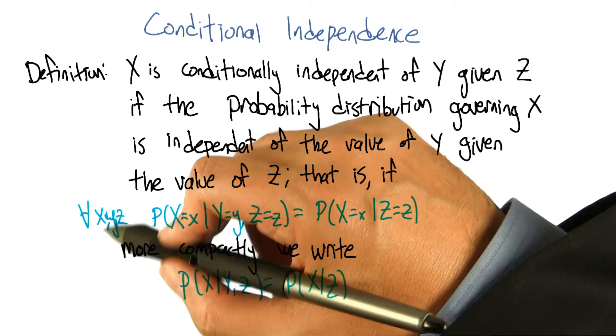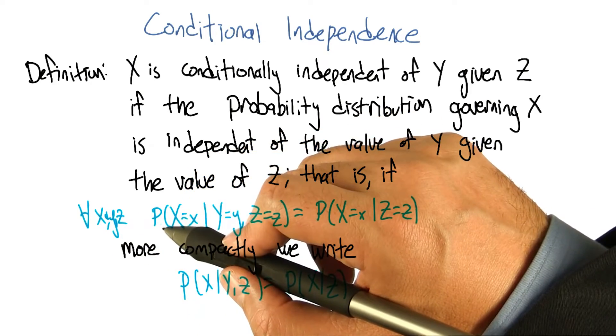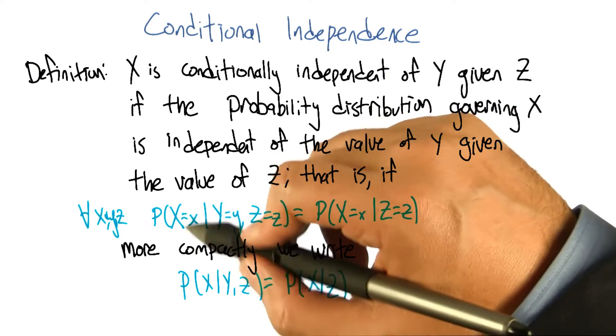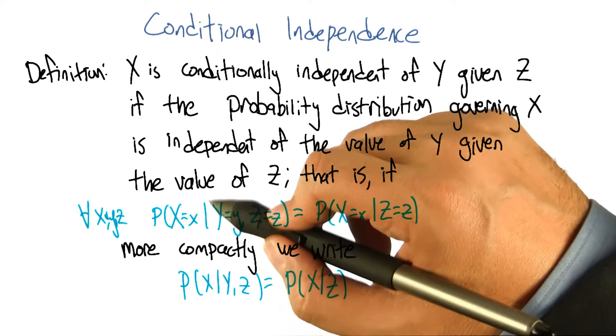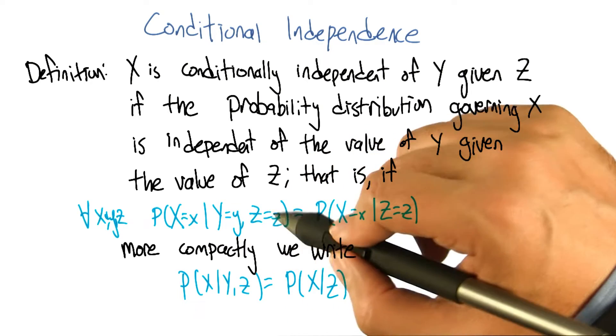So that is, if it's the case that for all possible values little x, little y and little z for the variables big X, big Y and big Z. If it's the case that the probability that big X, the random variable big X, take on the value little x, given that big Y takes on the value of little y, and big Z takes on the value of little z.